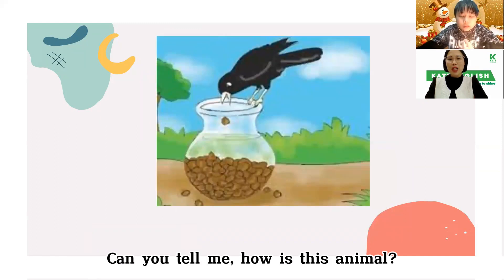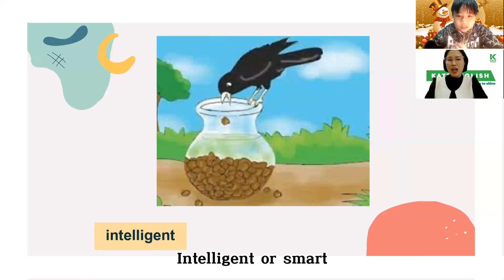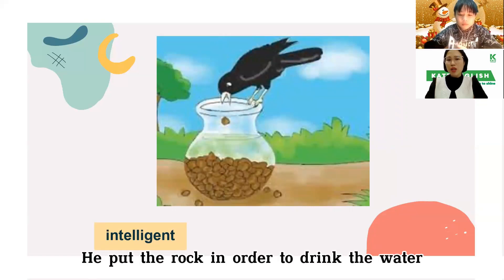Now, can you tell me how is this animal? Intelligent. Yeah, okay. Intelligent or smart. He put the rock in order to drink the water.